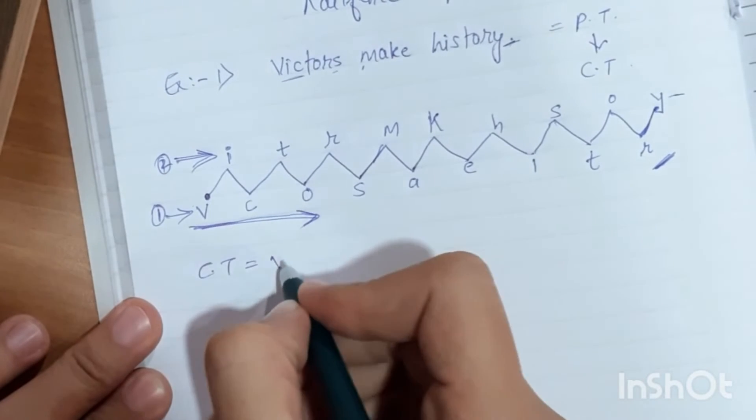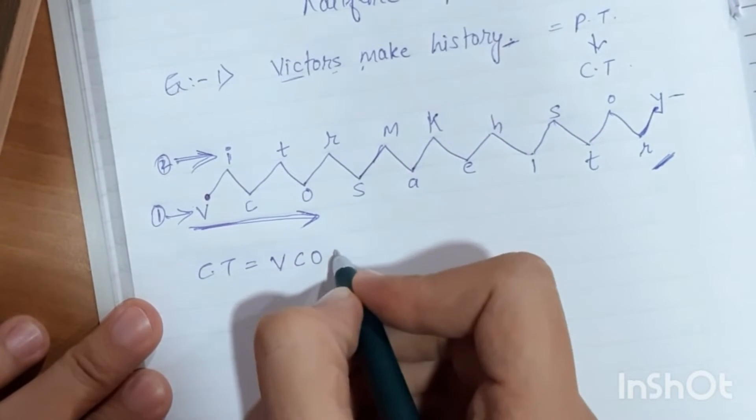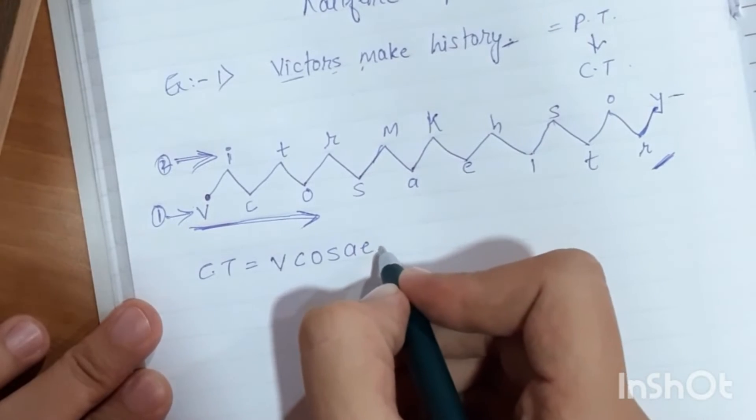Then collect the letters: V, C, O, S, A, E, I, T, R.